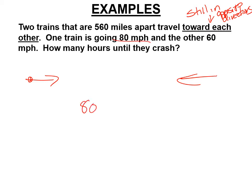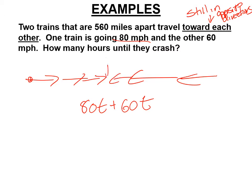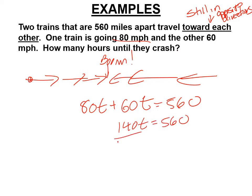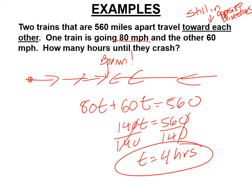One train is going 80 miles per hour, the other is 60 miles per hour, and we want to know exactly when these two are going to crash. There's our equation: 80 plus 60 is 140, so 140t equals 560. Divide both sides by 140, and 14 goes very nicely into 56 four times — t equals 4 hours. The key is you're always going to have a plus sign when the trains are traveling in opposite directions.